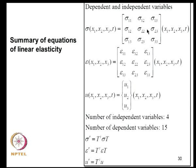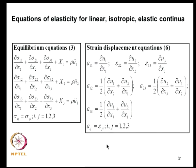Upon coordinate transformation, stresses obey the second-order tensor transformation rule, and displacements follow the vector transformation rule using the transformation matrix T. There are 3 equilibrium equations, and symmetry sigma_IJ = sigma_JI is assumed, meaning no body moments act on the system.